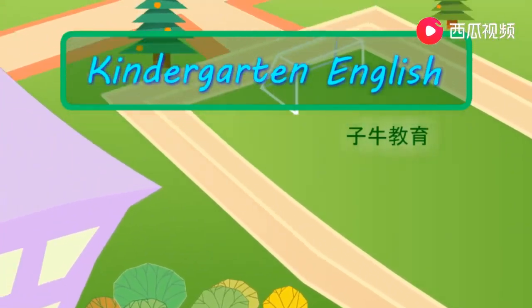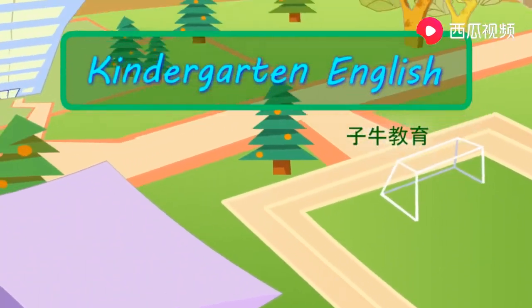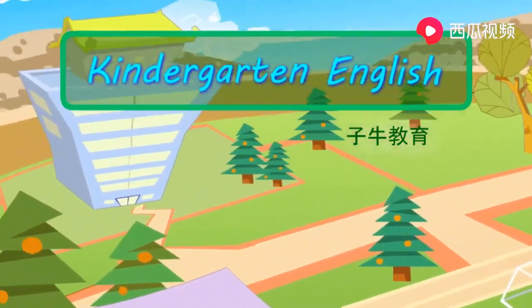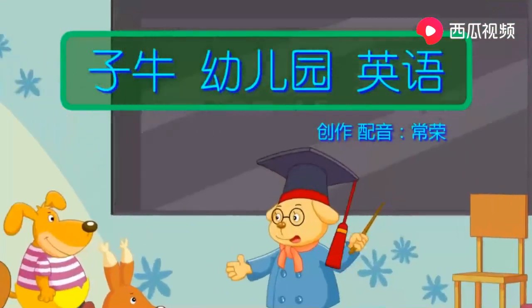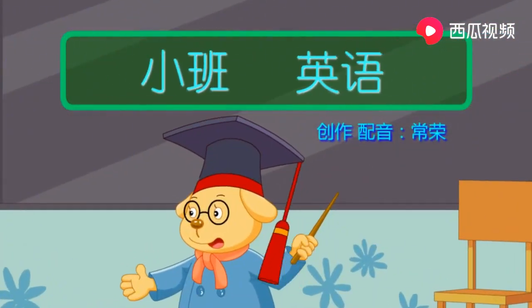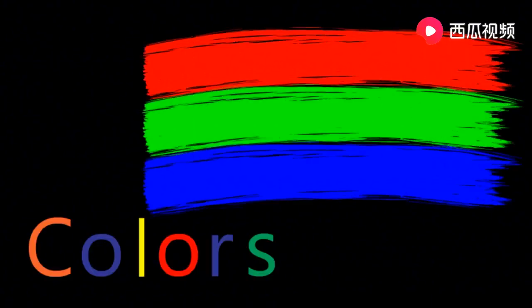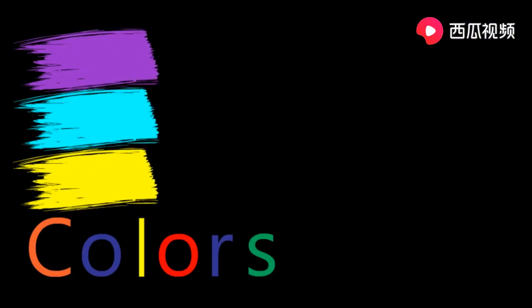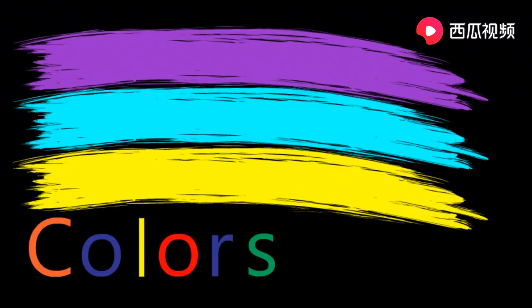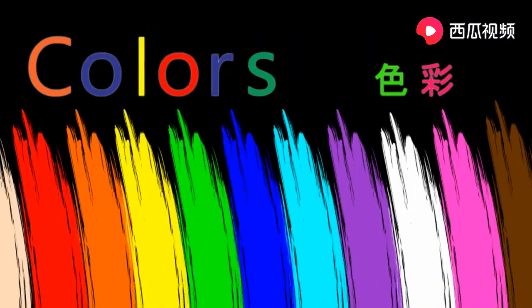紫牛 Kindergarten English 紫牛幼儿园英语 小班英语. Colors 色彩.